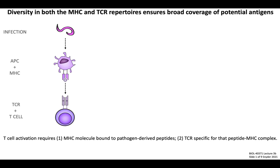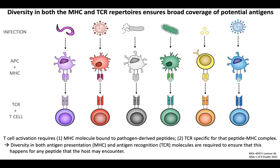Considering that innate and adaptive immunity must work together to coordinate antigen-specific responses against a massive diversity of potential pathogens, how do these systems ensure that receptors can bind to a wide variety of potential antigens? This diversity is accomplished on both sides of the antigen presentation equation — both the TCR as well as MHC. Adaptive immunity is characterized by an enormous repertoire of lymphocyte antigen receptors resulting from genetic recombination events. MHC molecules also exhibit highly diverse structures, which allows them to present essentially any peptide encountered following infection with any possible pathogen.